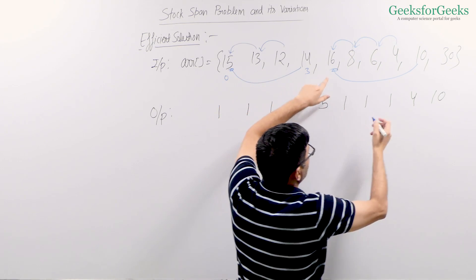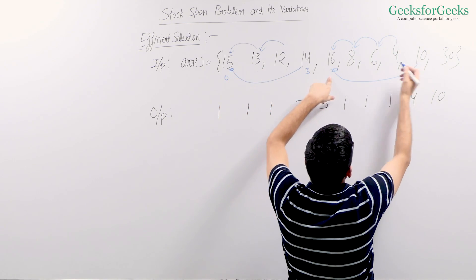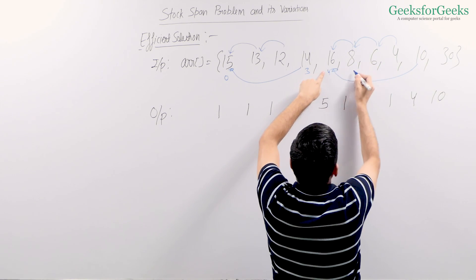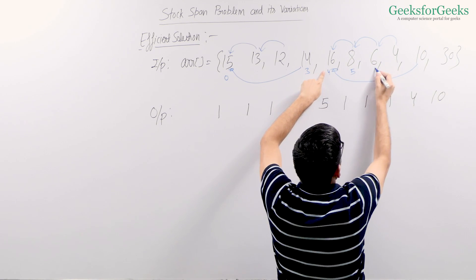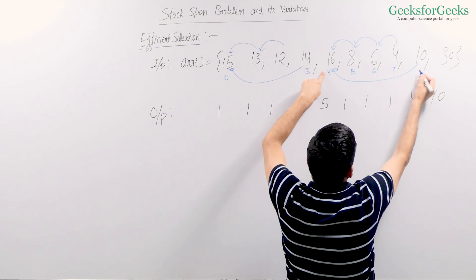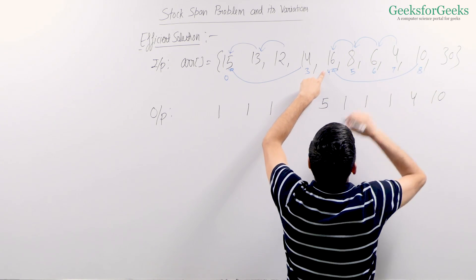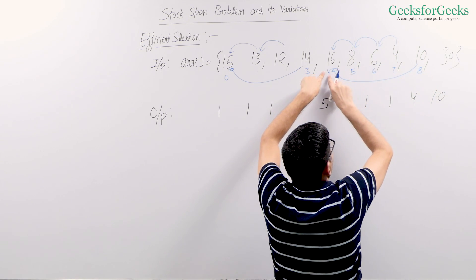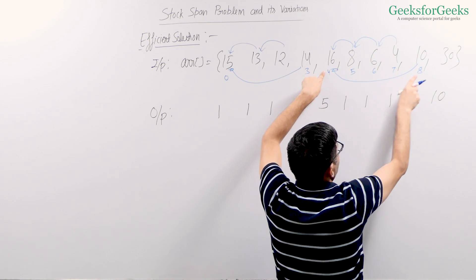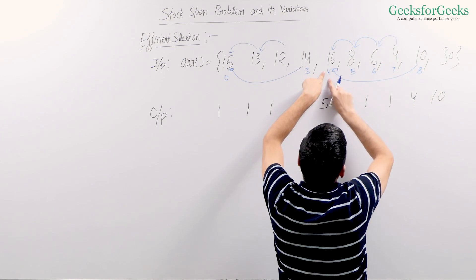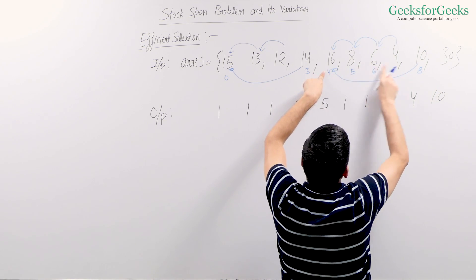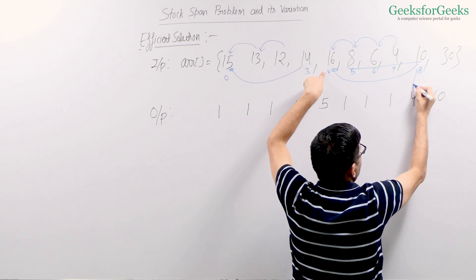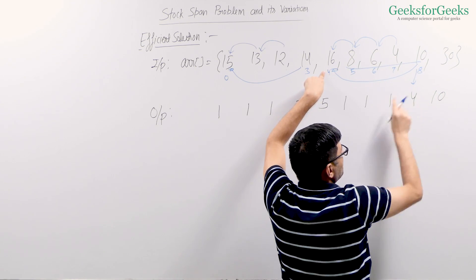Let's see more examples. For 10, index of 10 is 8 and index of its previous greater element is 4. So 8 minus 4 equals 4, which is the span of 10. You can see 4 is the span of 10. That's what we have written here as well. For 30, there is no greater on the left, so index of 30 is 9. That is why we say span is 10, which is i plus 1.